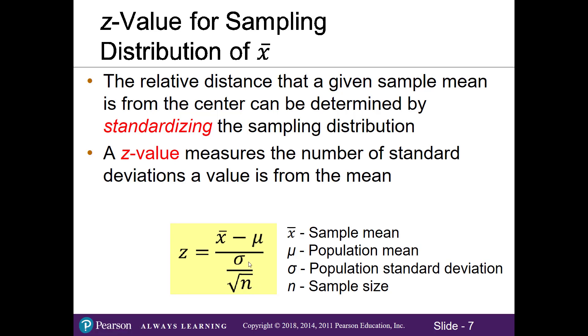If we convert our value into a z value, we can use Excel to find the probability of an event happening. Recall, this is why we convert our x values into z values—it allows us to use Excel to do the heavy lifting and calculations for us.